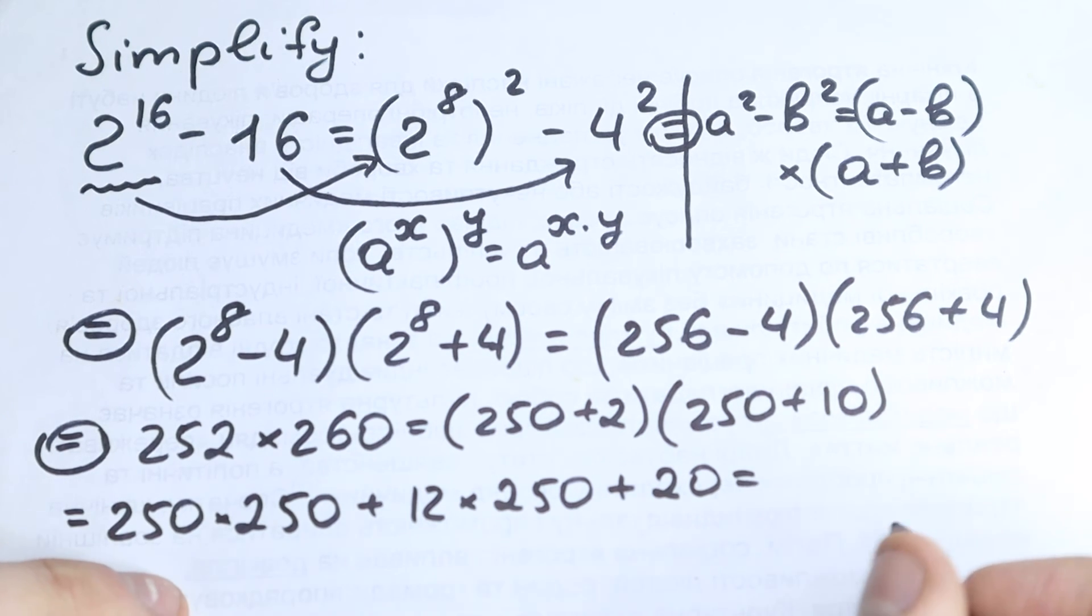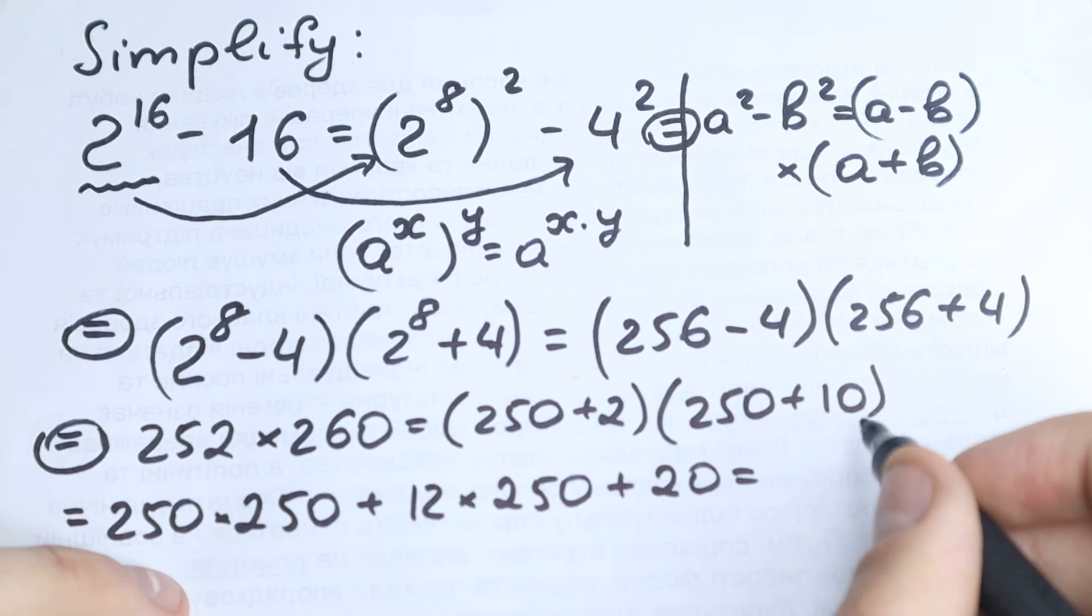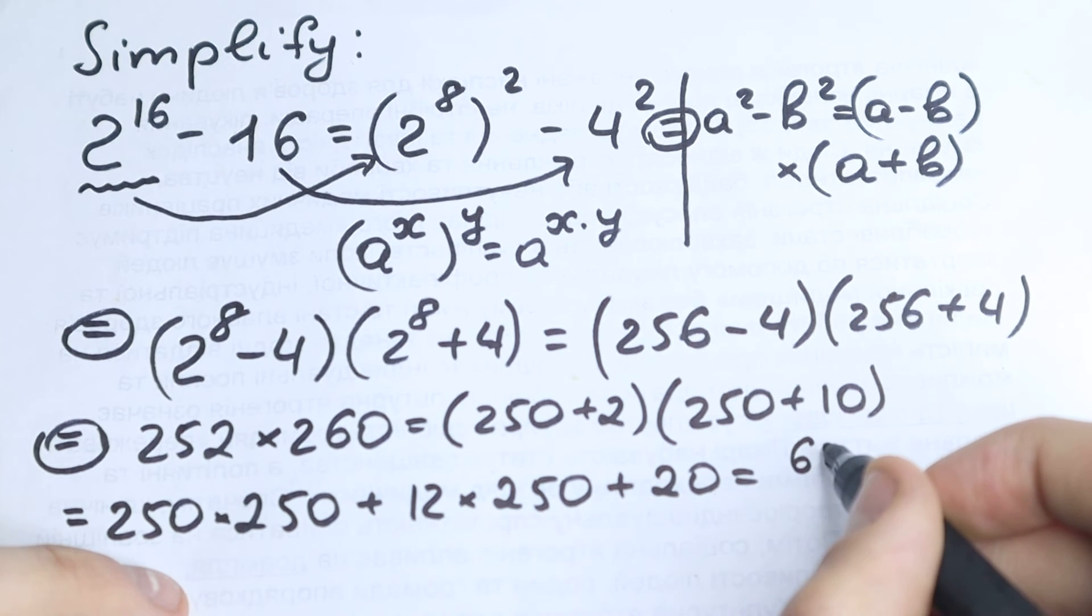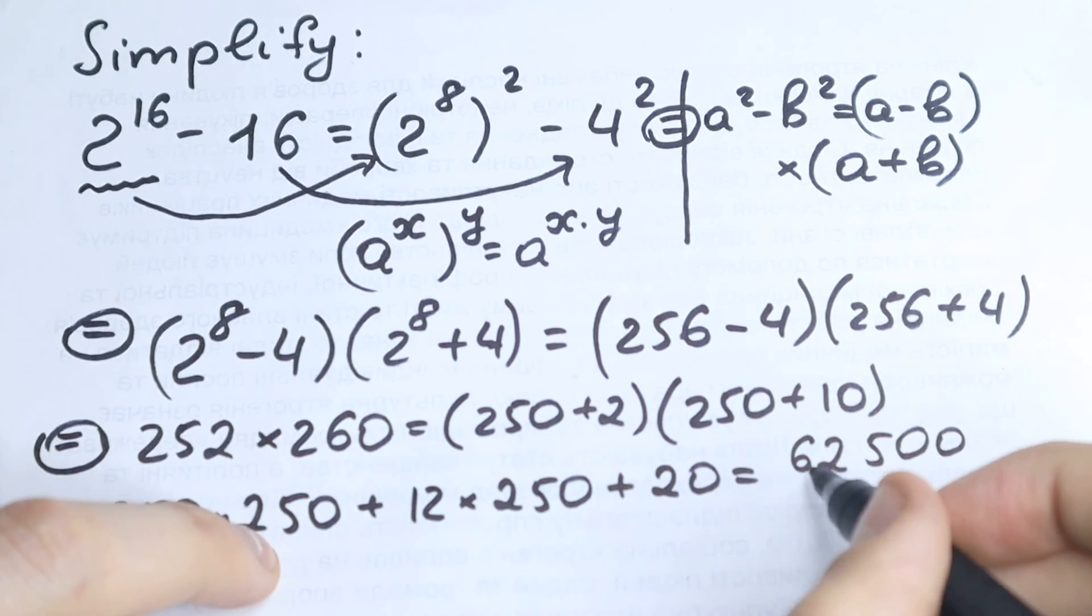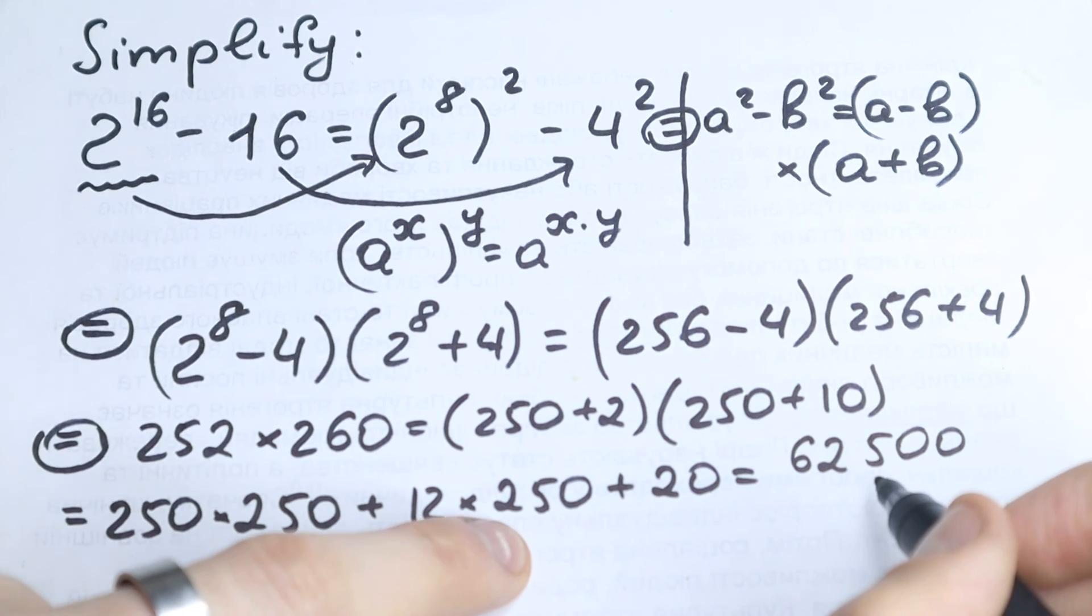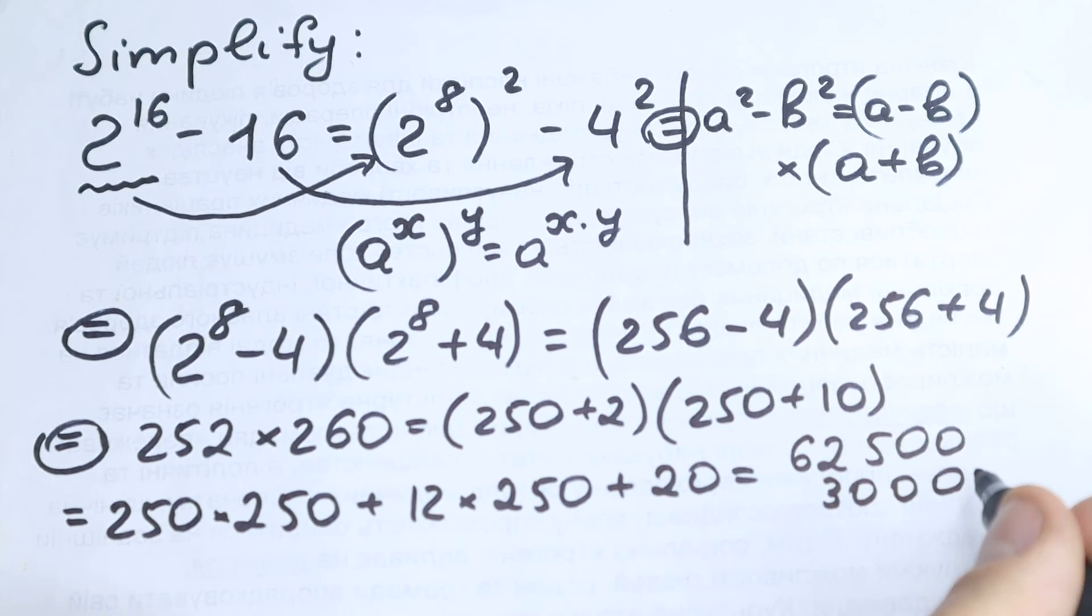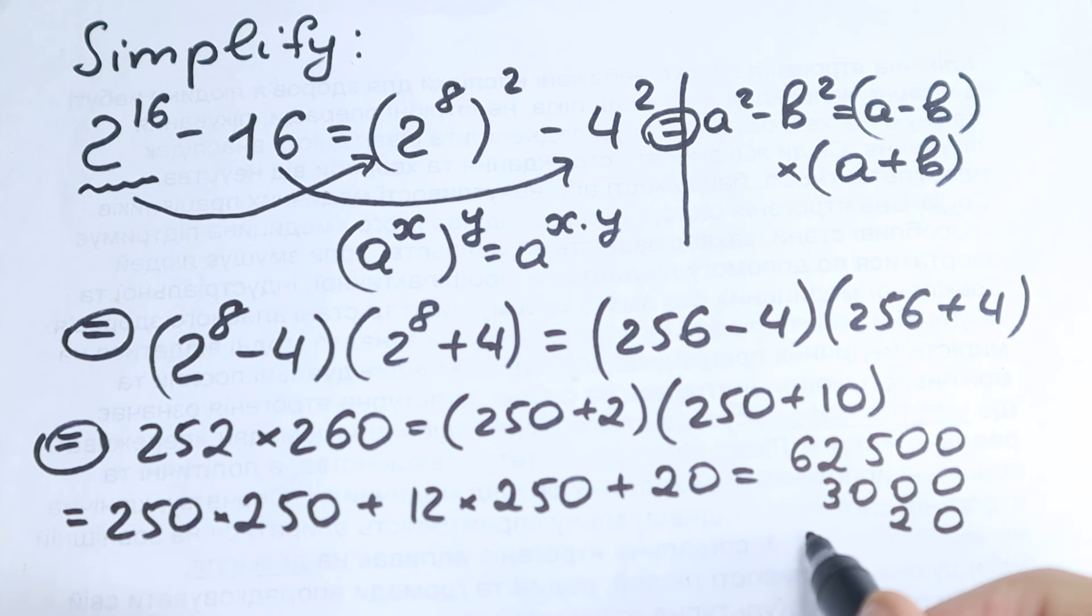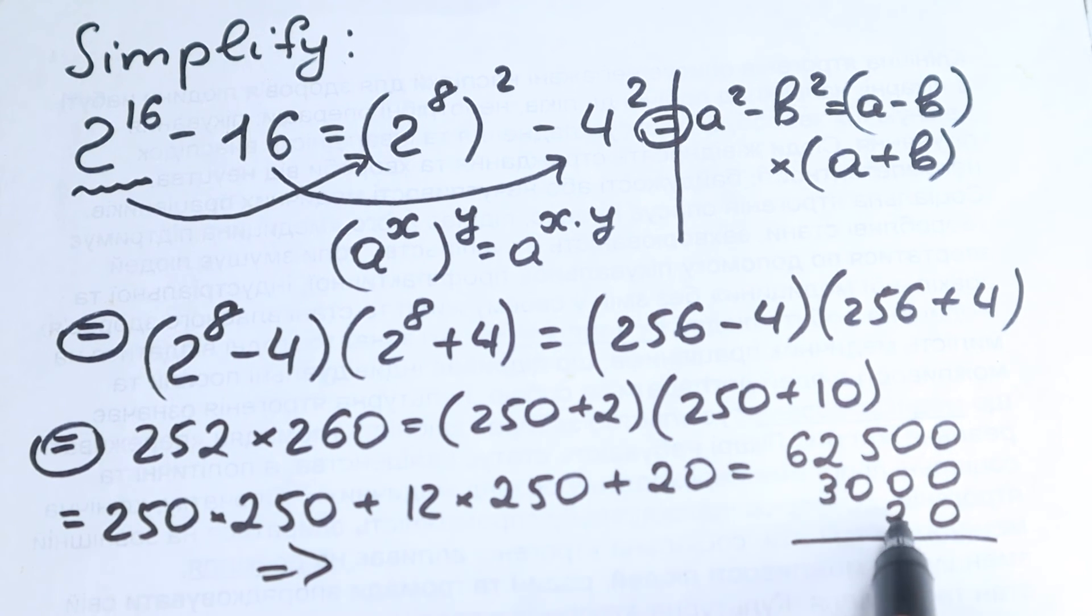So let's add it. Let's add all of this. So I write as 62,500, so it's our 25 times 25. Then we add to this, we add 12 times 250, we have 3000, and plus 20. I hope you will understand it. And right here I write our answer. So we have 65,520.